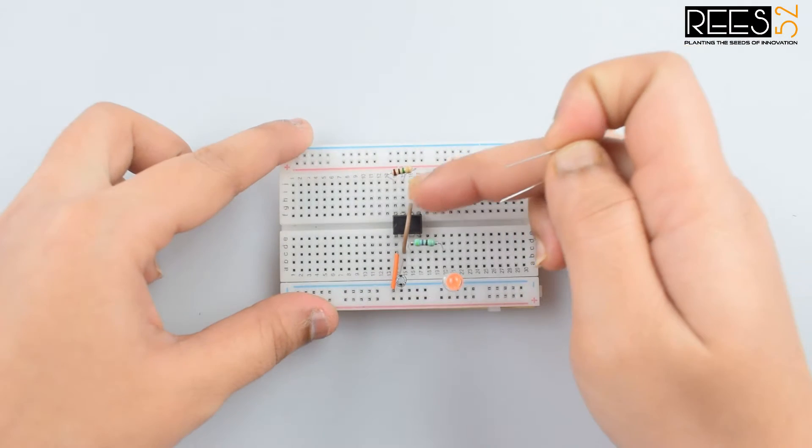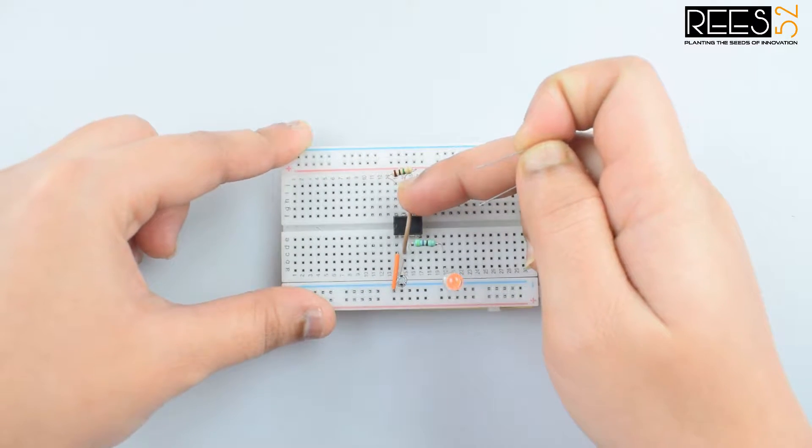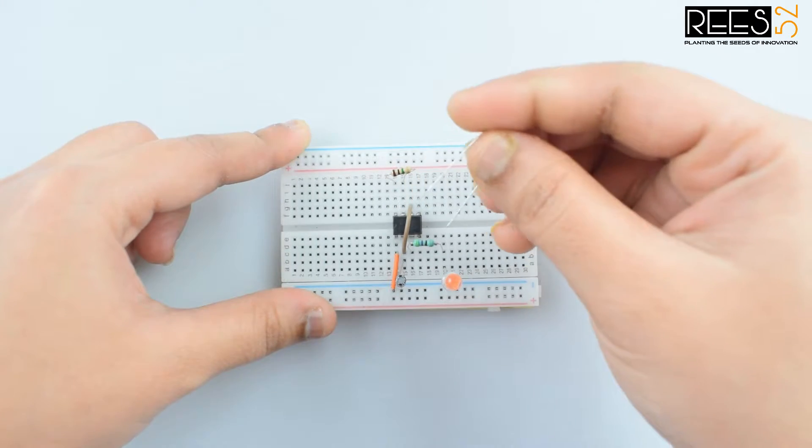Now connect pin 7 of the 555 timer IC to pin 6 via a 22 kilohm resistor.